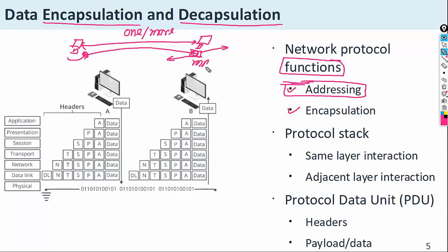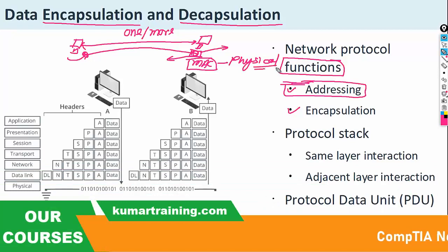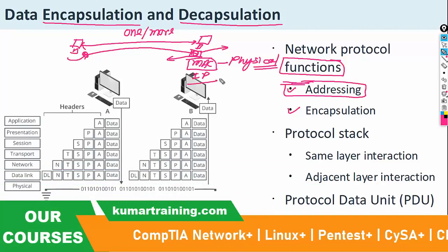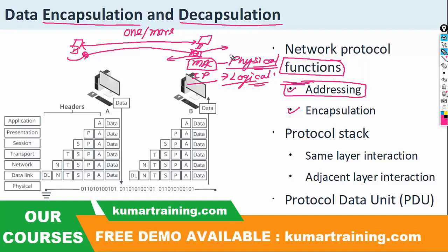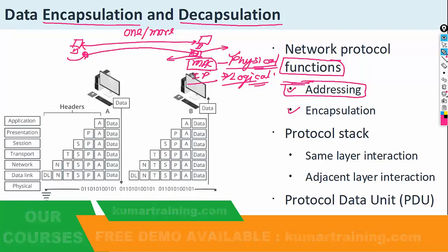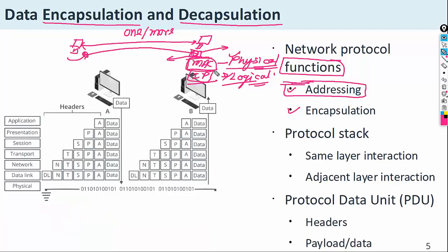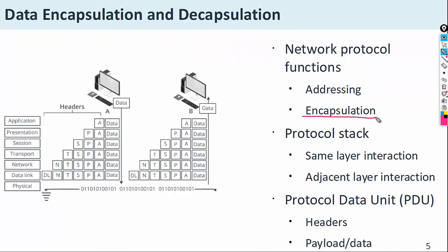Addressing may be based on the MAC address, which is a physical address, or it may be based on the IP address, which is a logical address. So there are two types of addresses: one is a physical address based on MAC, and another is a logical address based on IP. After that, encapsulation and decapsulation happen.